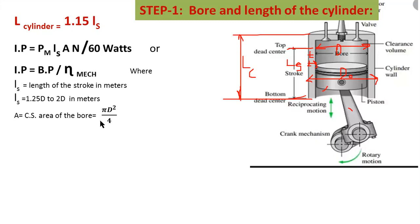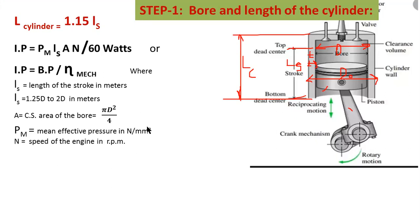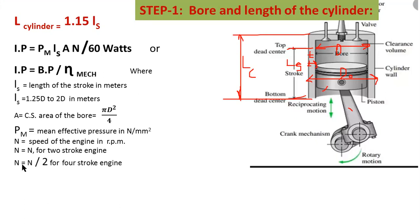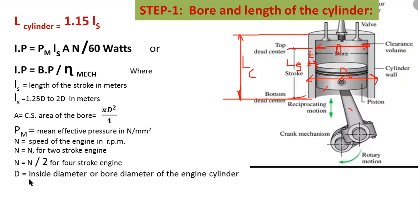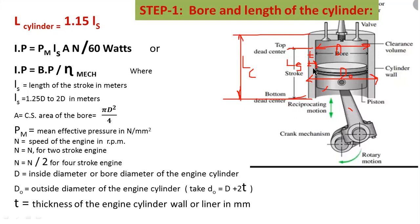A is the cross-sectional area of the bore, that is π/4 × D². You have to consider inner diameter only for the cross-sectional area. D is the inner diameter of the cylinder — that is the bore diameter. PM is the mean effective pressure in Newton per meter squared. N is the speed of the engine. For a two-stroke engine, N equals N directly. But for four-stroke engines, you have to consider half the speed of the engine.